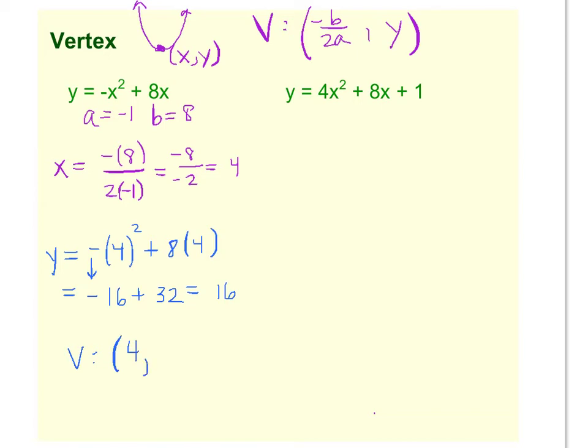So our vertex will have the ordered pair, the x was a 4, and the y was a 16. And we are set with that one.